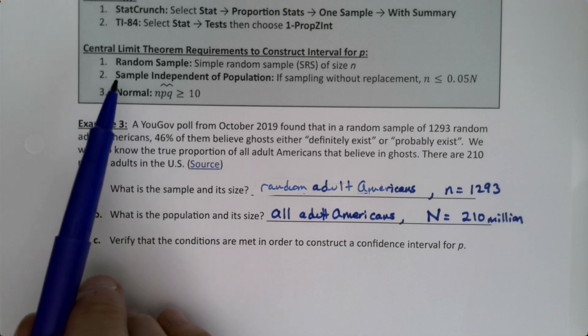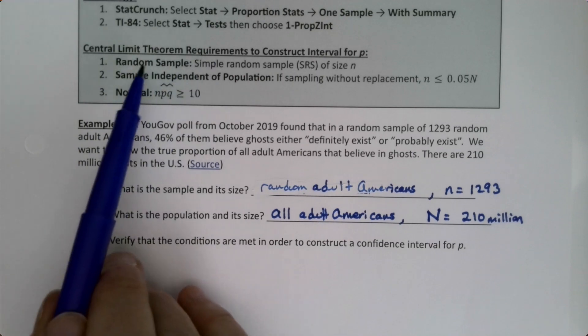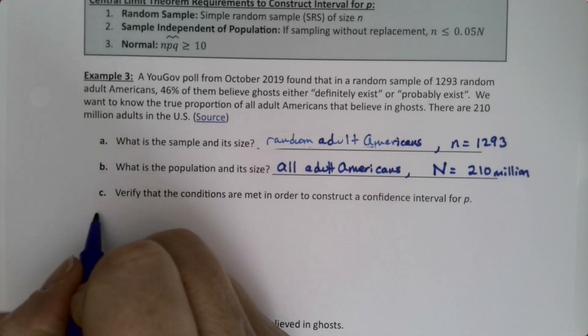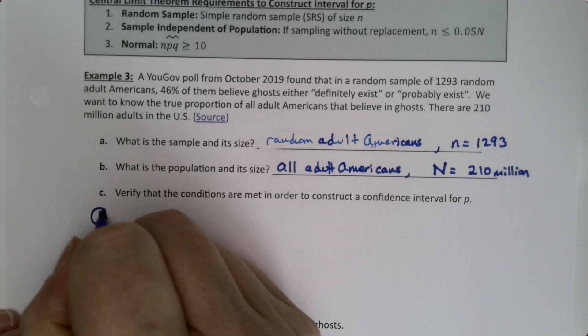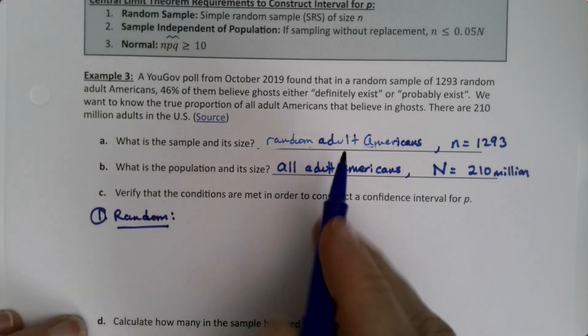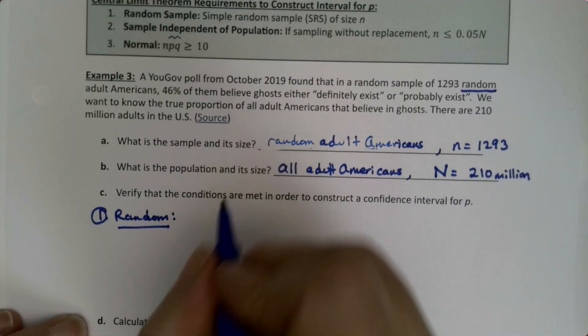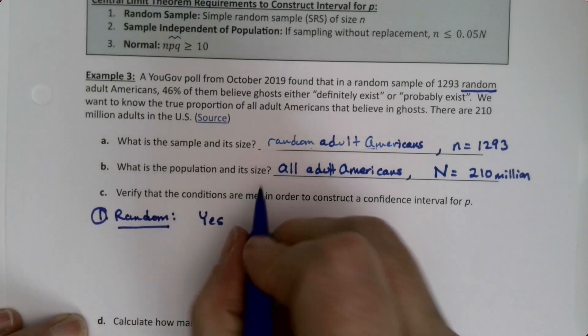Number one, we need a random sample. That's given—I wrote the word random right there—so this is yes, because it's given.